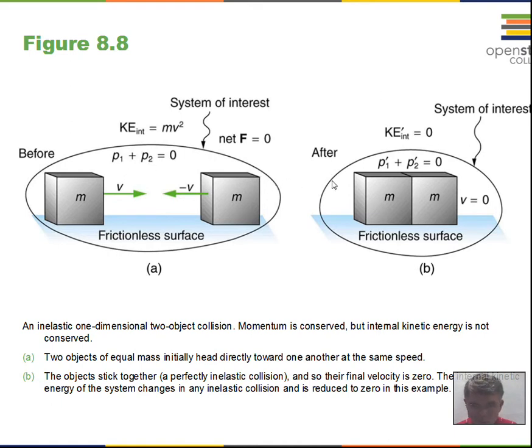Afterwards, there will only be a single M—it'll be m plus m in this example that's being shown. It'll be a single object though, and we'll have a single velocity. This total mass times the final velocity will equal the sum of the individual MVs that we had before the collision. So it's a very straightforward calculation.